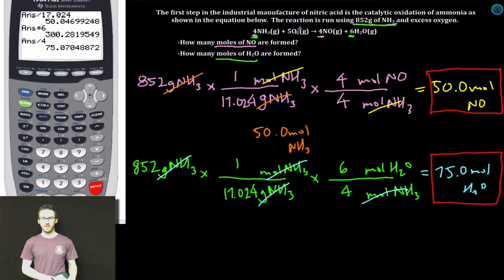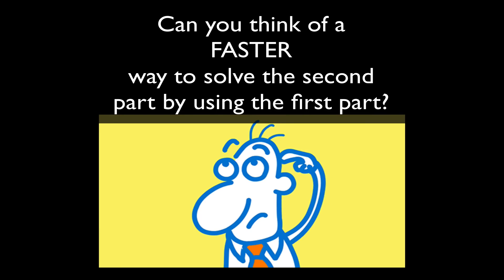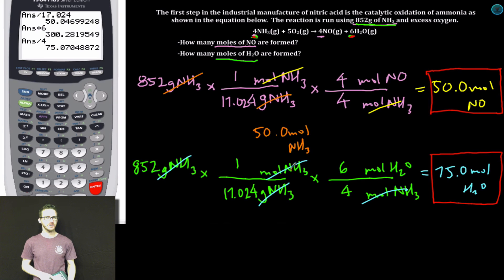go back to the balanced chemical equation. How does 6 compare to 4? It's one and a half times as big as 4. I know that I have 50 moles of NH3 in this 852 grams of NH3. 75 moles of H2O is one and a half times as big as 50. And we are done.